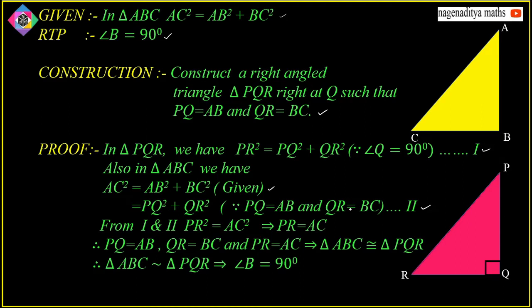Since the two triangles are similar, their corresponding angles must be equal. So angle Q must be equal to angle B. The value of angle Q is 90 degrees, since PQR is a right angle triangle. Therefore angle B = angle Q = 90 degrees. Hence, in triangle ABC, angle B = 90°, so it is a right angle triangle.